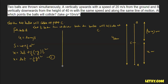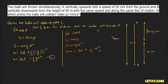For ball B, thrown downward from the top with u = 20 m/s, we use the same equation: s = ut + ½at². Here s = 40 − x, u = 20, t is the same collision time t, and acceleration is positive g because the ball moves downward. So our second equation is: 40 − x = 20t + ½gt².